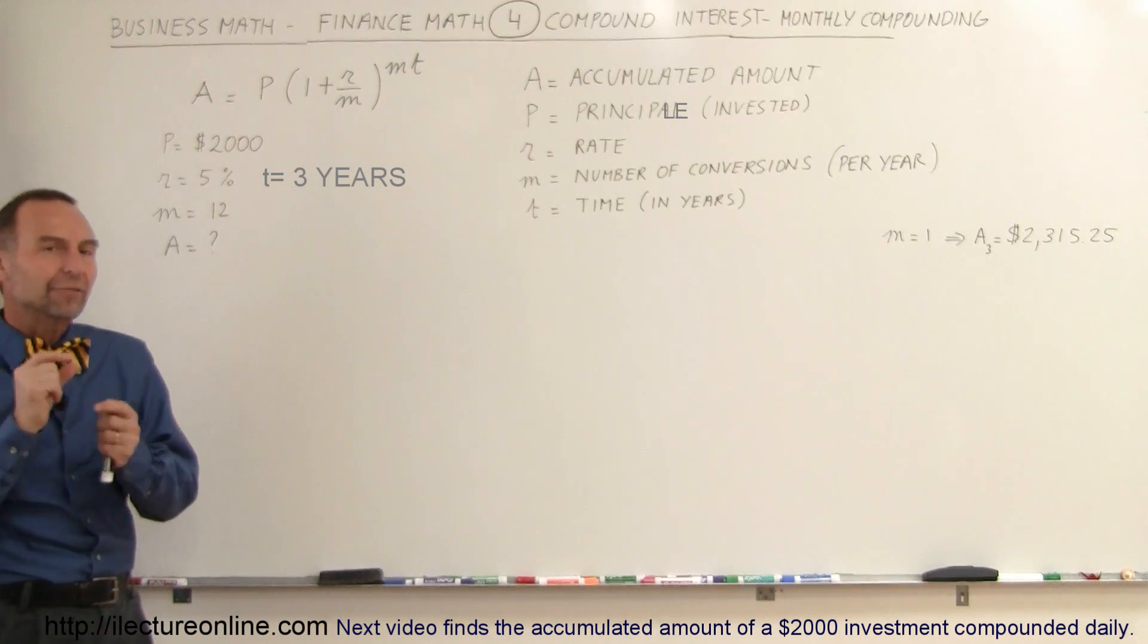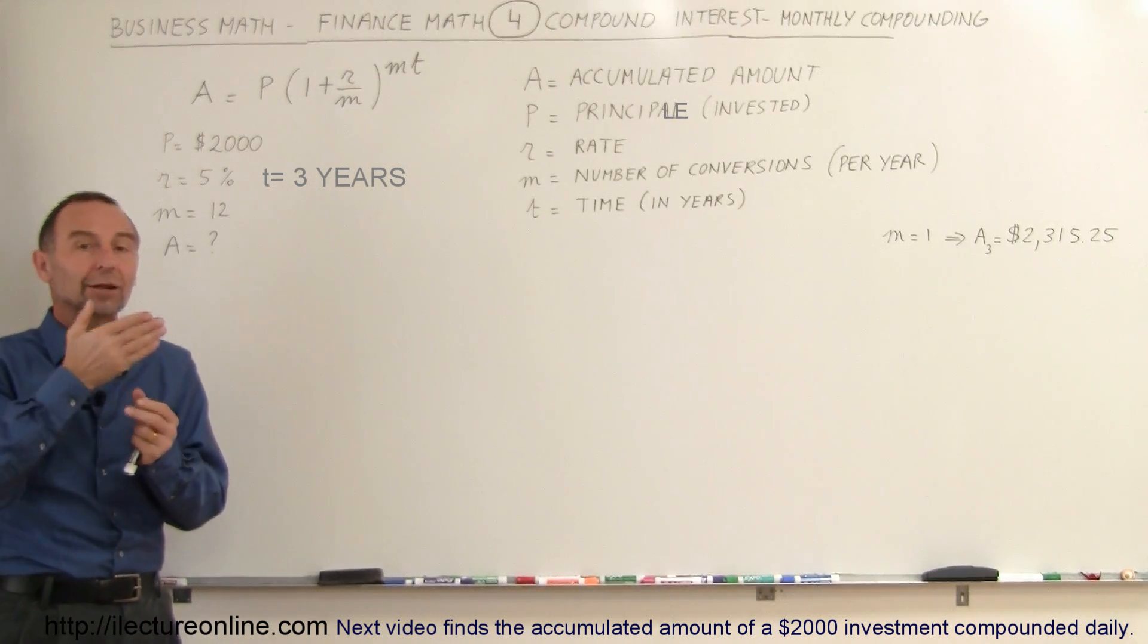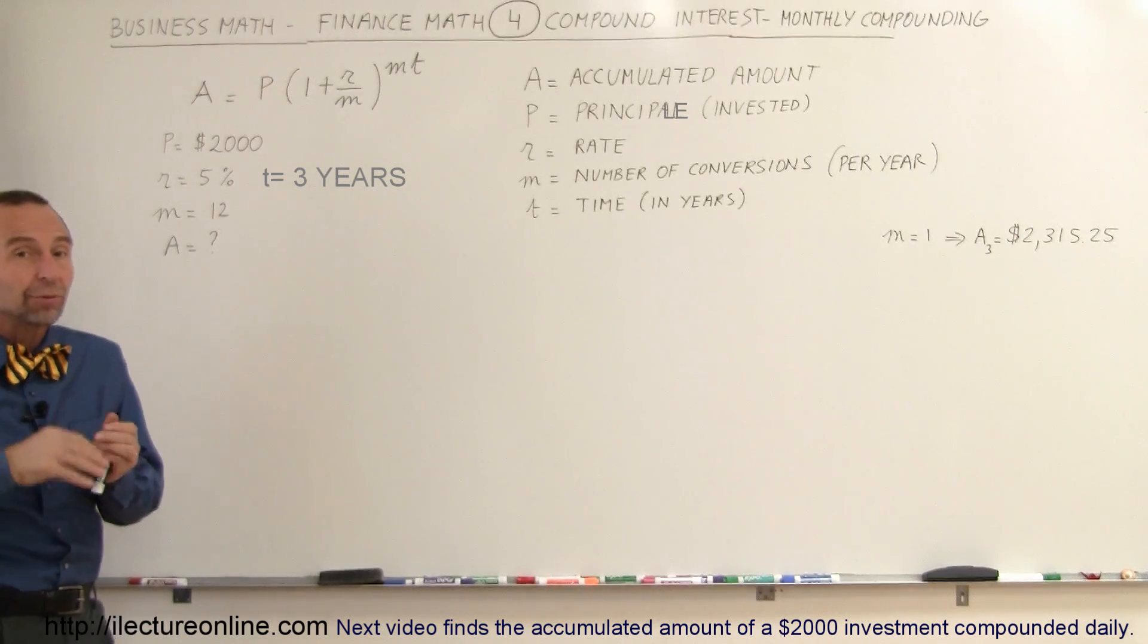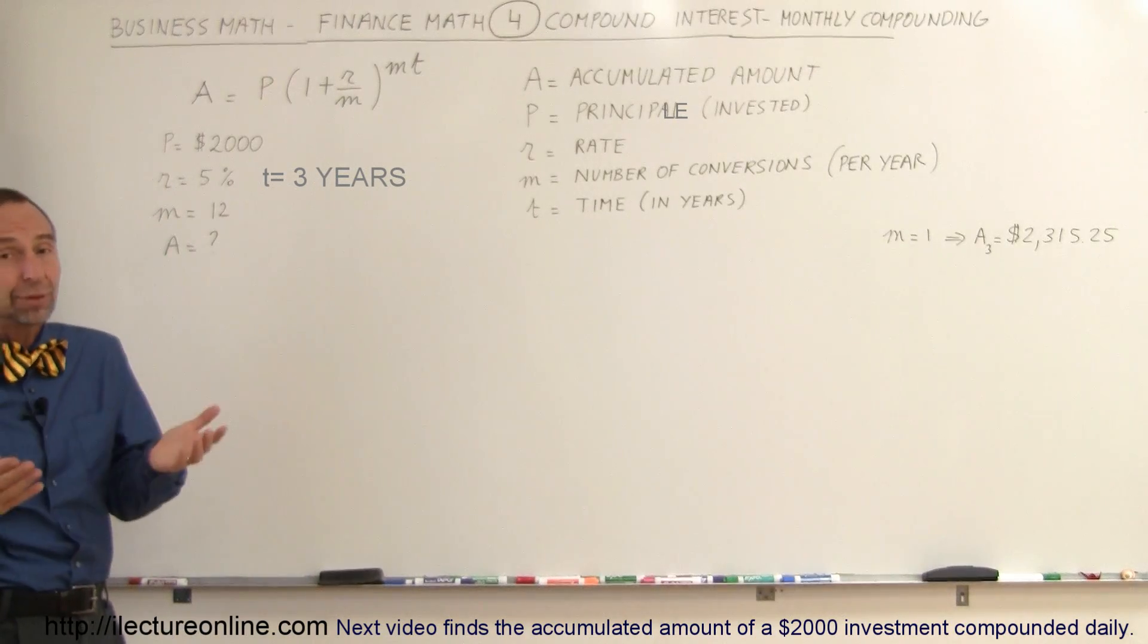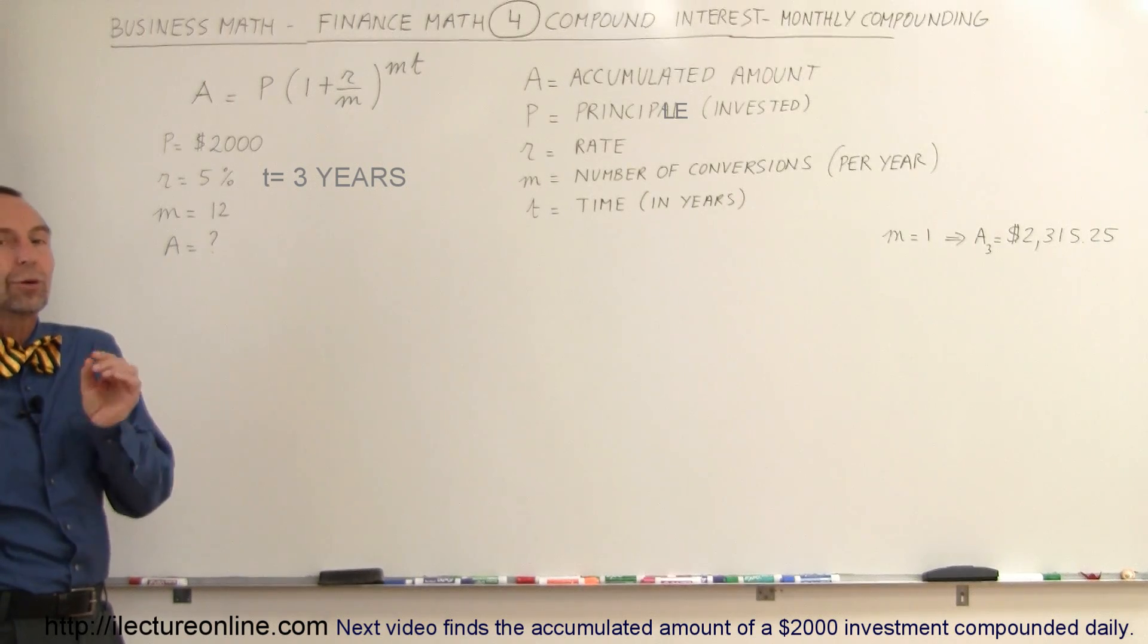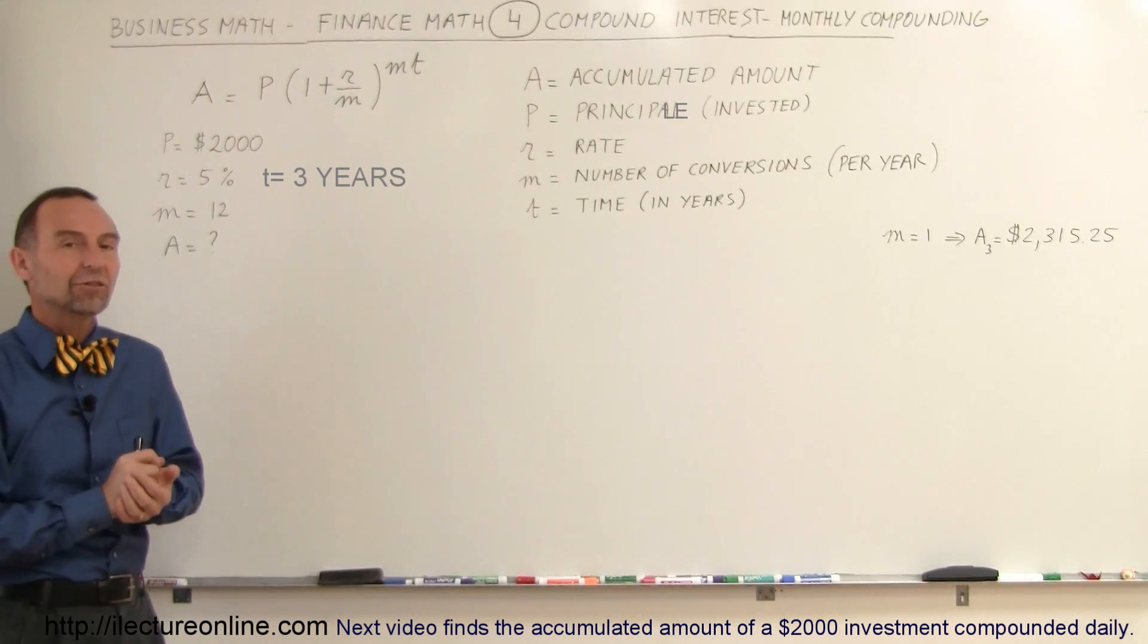We're going to calculate the amount of interest earned every month, add it to the principal, and then you begin to earn interest on the principal already after one month, rather than after a year, or in the case of simple interest, not at all. You simply only earn interest on the original amount invested.